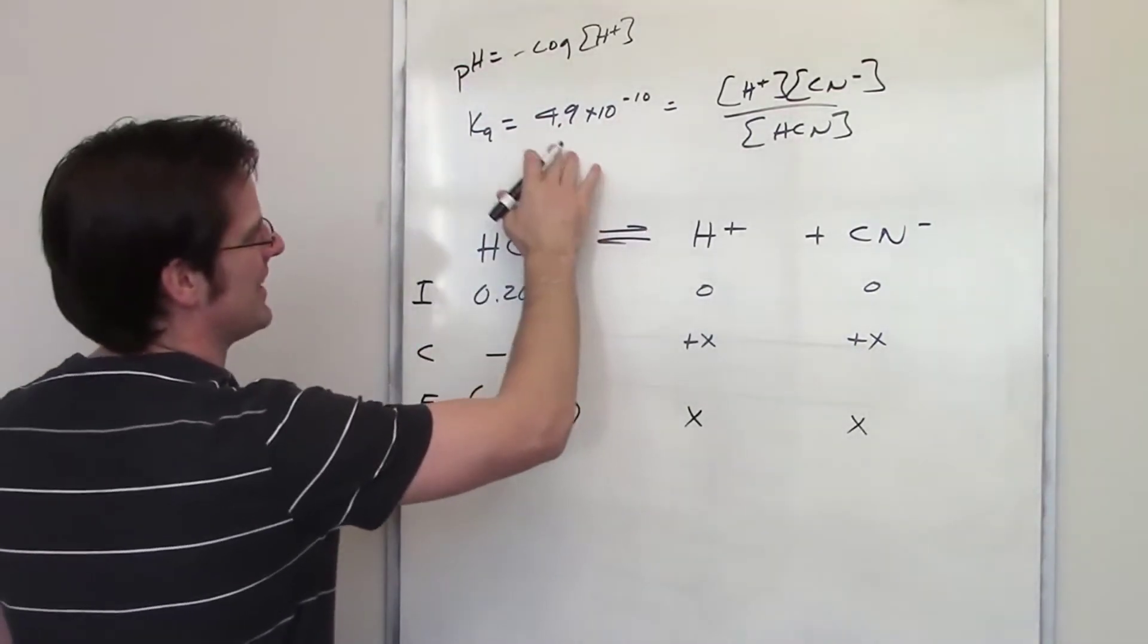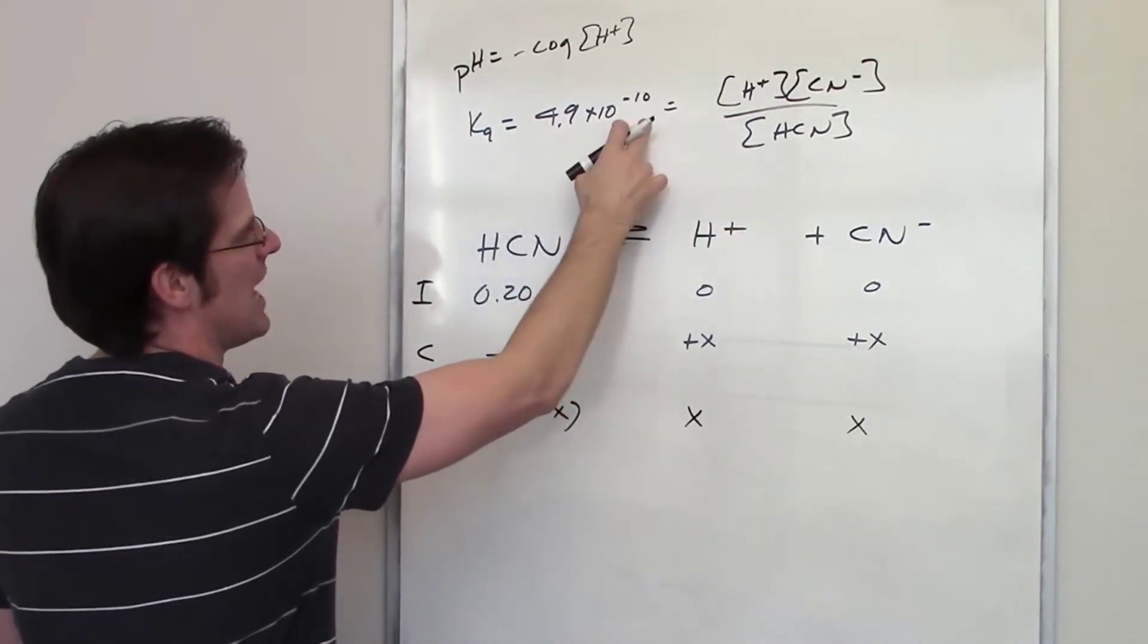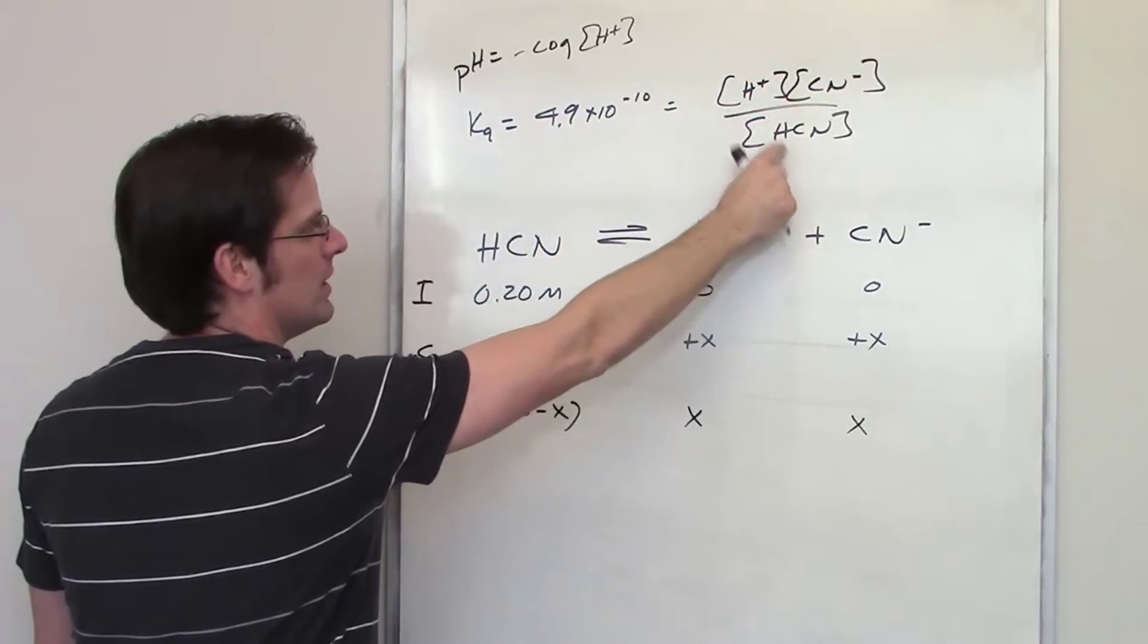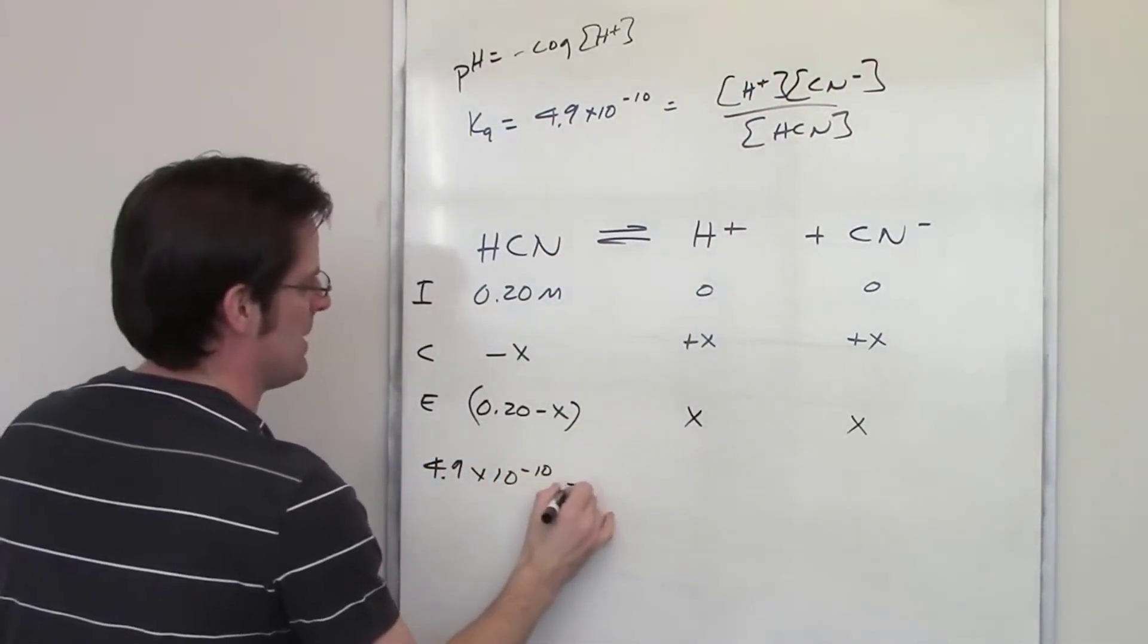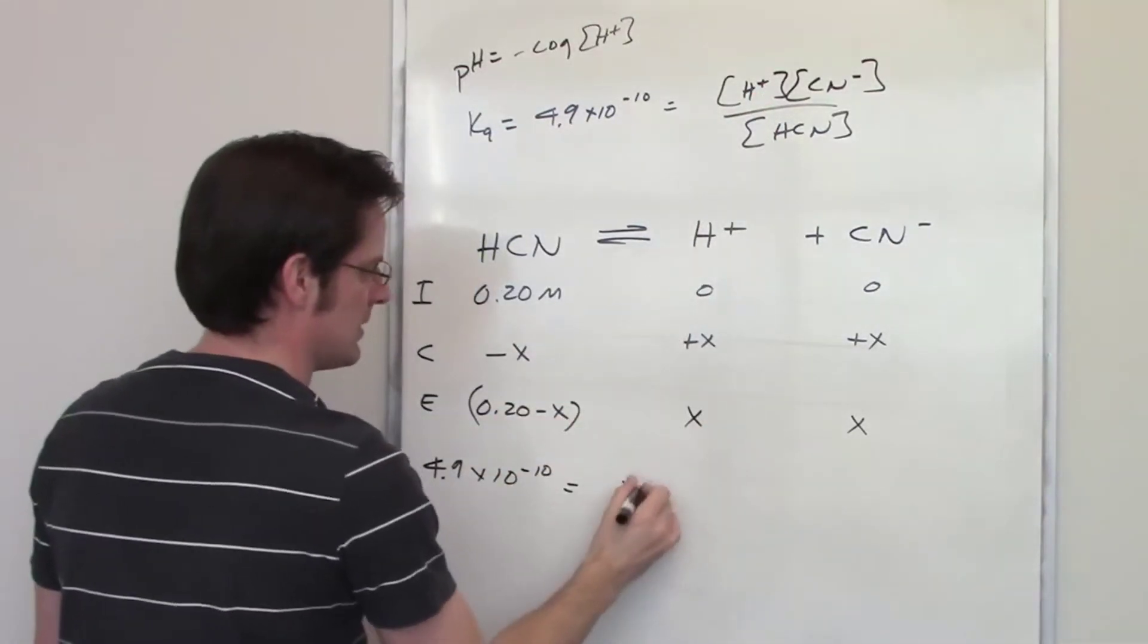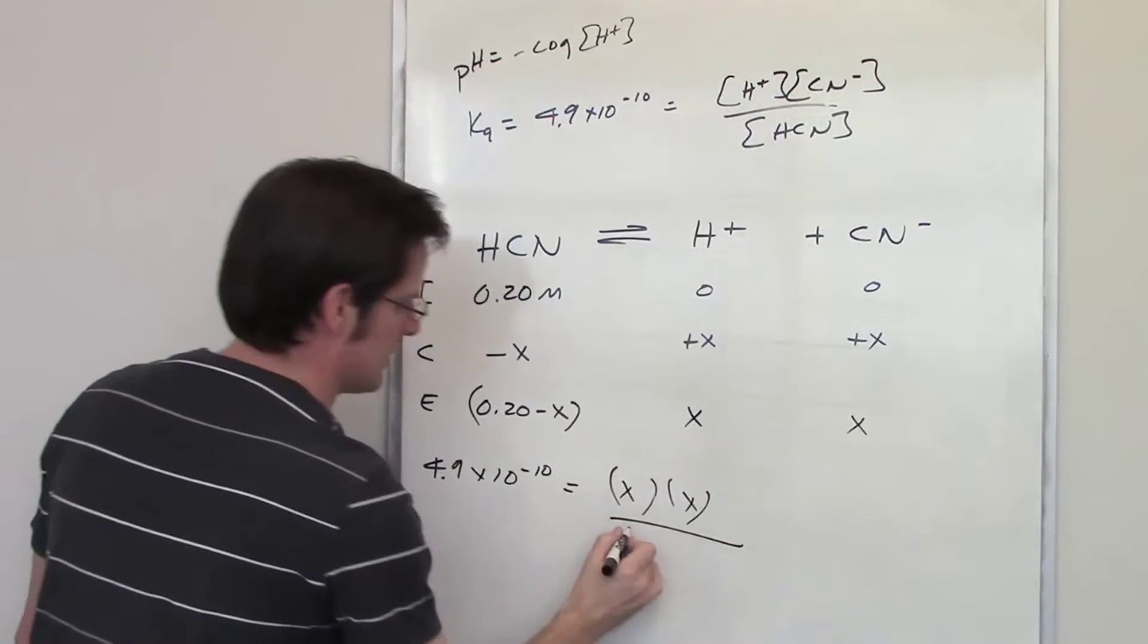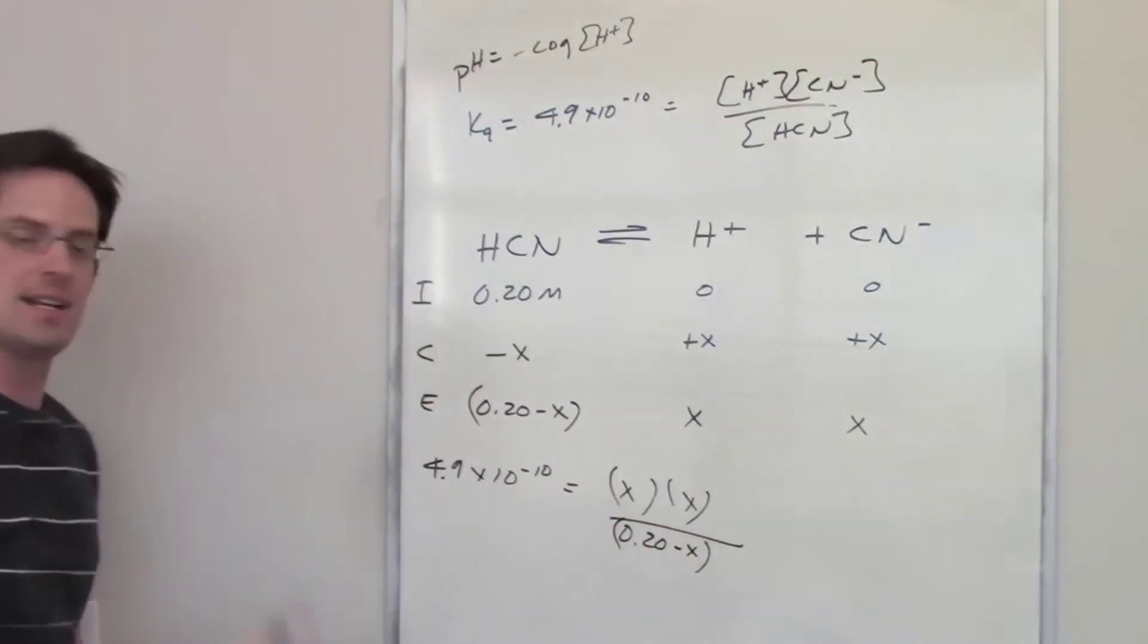So once again we've got a K expression up here, 4.9 times 10 to the negative 10th, equaling each of these things. What I'm going to do is I'm going to take these values and throw them in for where they belong here. So I've got 4.9 times 10 to the negative 10th being equal to H plus equilibrium concentration, which is X. CN minus equilibrium concentration is also X, and I divide that by the HCN equilibrium concentration which is 0.20 minus X.